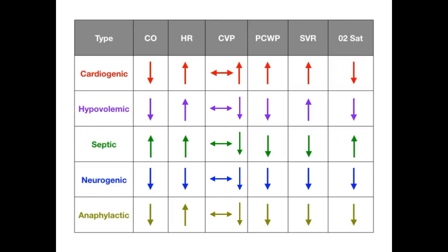For anaphylactic shock, cardiac output is down — it simply cannot keep up with demand due to massive vasodilation. Heart rate, however, will compensate, because there's no problem with sympathetic tone in anaphylactic shock (unlike neurogenic shock). Central venous pressure, pulmonary capillary wedge pressure, and systemic vascular resistance are all down because anaphylactic shock is still a vasodilatory process. Oxygen saturation is also down.